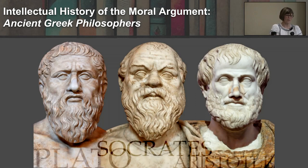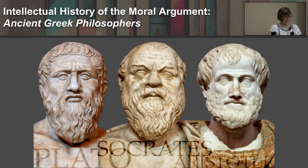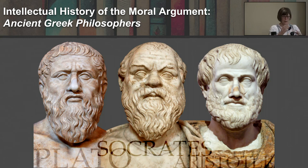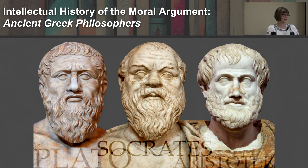Objective moral traditions can be found in the laws of both Eastern and Western cultures — Greek, Hindu, ancient Chinese, Christian, ancient Indian, Babylonian, Hebrew, ancient Roman, and Egyptian. But in the Western tradition, we usually begin with Greek philosophers, and that's what Baggett does in his history of the moral argument.